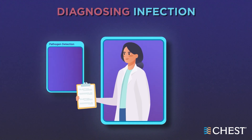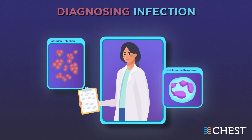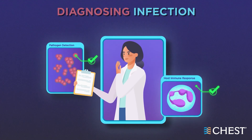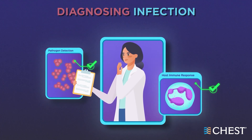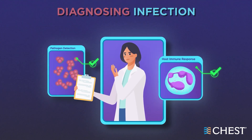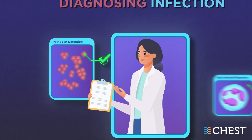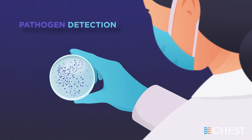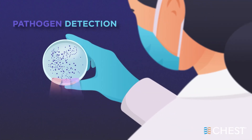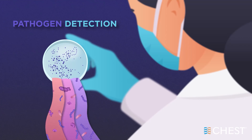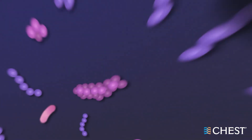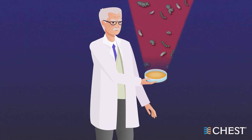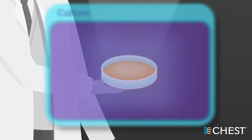Pathogen detection and host immune response are more reliable methods to detect whether an infection is present. Cultures are the traditional method for demonstrating the presence of infection, but cultures are slow and rely on techniques that are more than a century old.